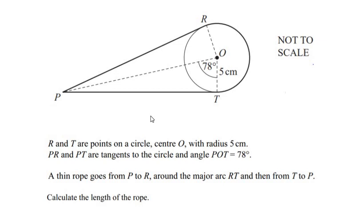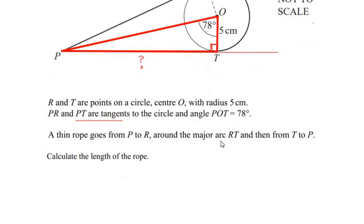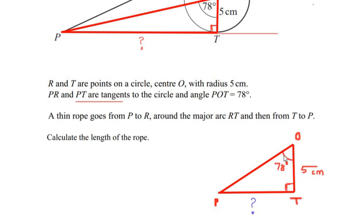To find these values, let us start with triangle POT. Triangle POT is a right-angled triangle at point T, because PT is the tangent to the circle, and any tangent always makes a 90-degree angle with the radius. Since OT is the radius and PT is the tangent, they make 90 degrees. In this right-angled triangle, the side PT is opposite to the 78-degree angle, and the side opposite to the 90 degrees is the hypotenuse, whose value is not given.